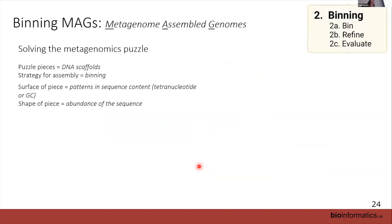MAGs — Metagenome-Assembled Genomes — have special uses. Sometimes they're also referred to as bins. For the purposes of this workshop, I'll make a distinction: a bin is what's spit out by a binning algorithm, and a MAG is a bin that we've checked and we're happy with — good enough quality to move into annotation and treat like a genome.